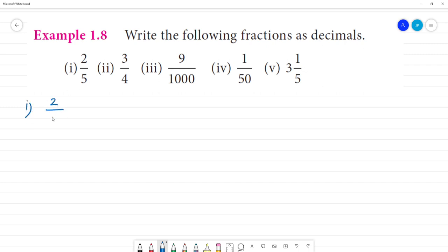2 by 5. We will convert the denominator to 10. 5 into 2 is 10. In the numerator, we will multiply the numerator 4 by 10. That is equal to 0.4.